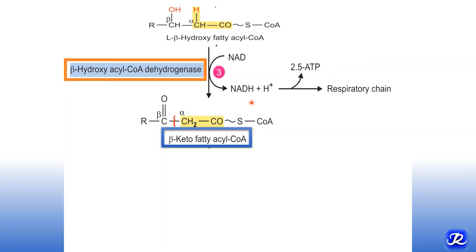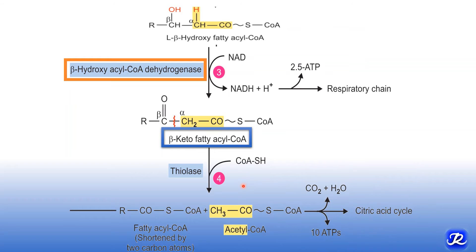The NADH formed is oxidized through the electron transport chain to form 2.5 ATP. The fourth step is cleavage by the enzyme thiolase, which requires coenzyme A. An acetyl-CoA molecule (a two-carbon unit) is cleaved off, shortening the fatty acyl-CoA by two carbons. This shortened fatty acyl-CoA undergoes further cycles of beta oxidation, with each cycle removing one acetyl-CoA, until all acetyl-CoA molecules are formed.